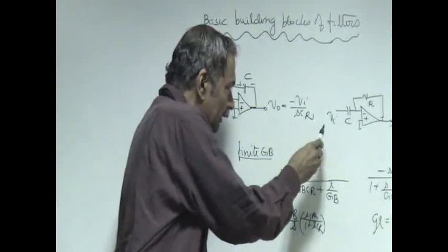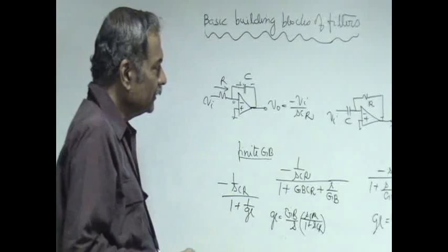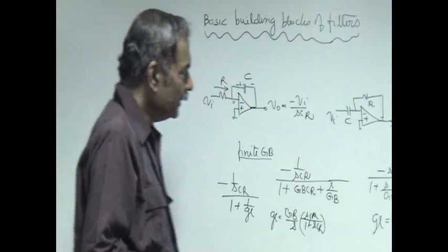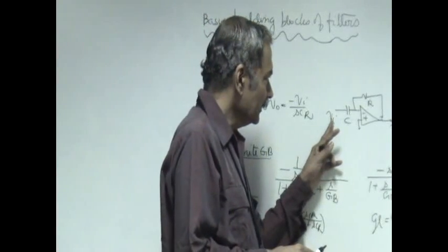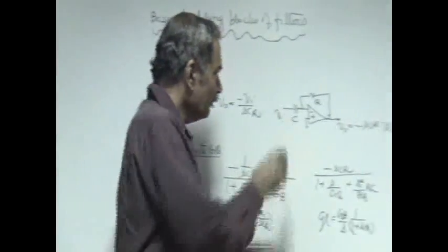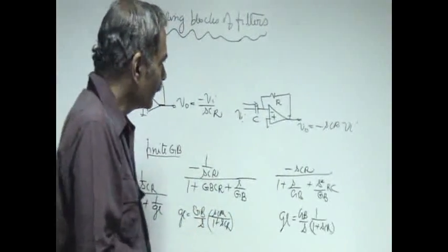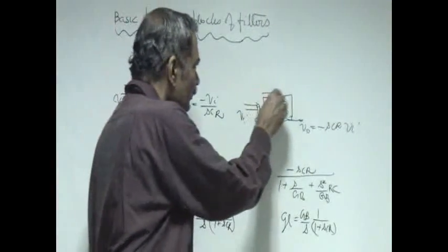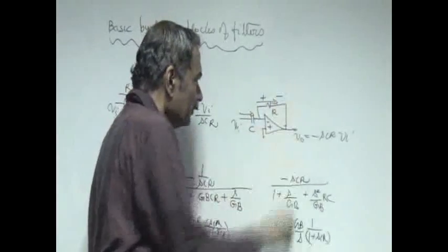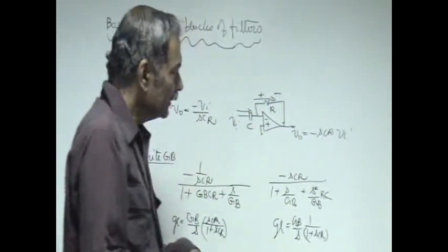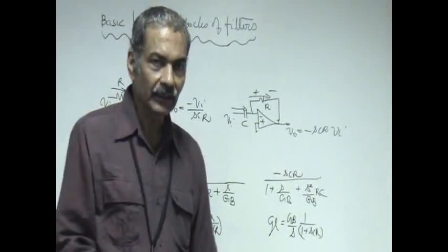In the differentiator, R and C are interchanged, so the operation gets interchanged. Vi drives a current through the capacitor, which is Vi multiplied by sC, and that current flows through the resistor R and develops a voltage which is minus sCR times Vi. Therefore, the output is differentiated.